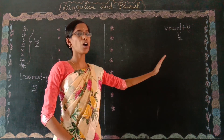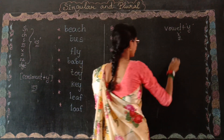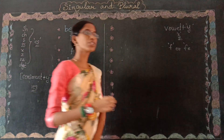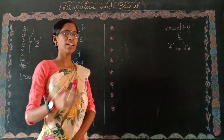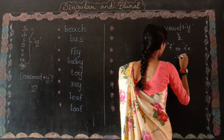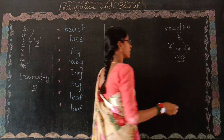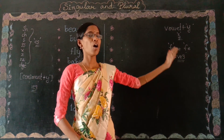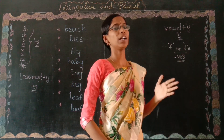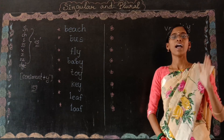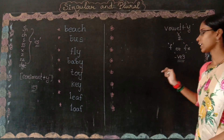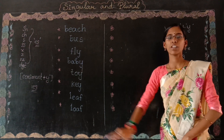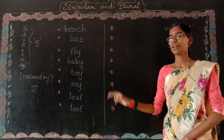Now coming to the fourth rule: if a noun ends with F or FE, then you have to remove F or FE from the word and you have to add VES to the noun to change it from singular into plural. Now we will see some words and apply those rules.